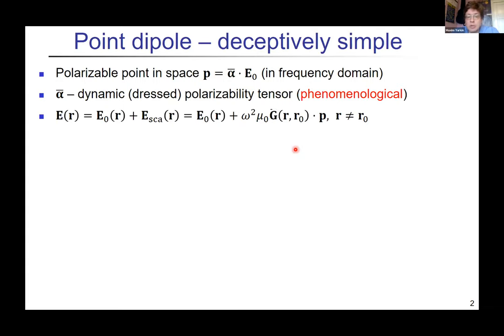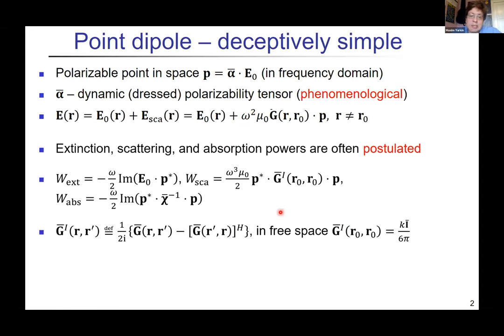Once you fix the frequency, you also have field everywhere in space given by this quantity where G is the Green's dyadic, either free space which is trivial or some environment that is present like substrate near the dipole. You want some other measurable quantities like extinction, scattering, and absorption powers. Here again some confusion starts in the literature that sometimes they're derived, sometimes they're postulated.